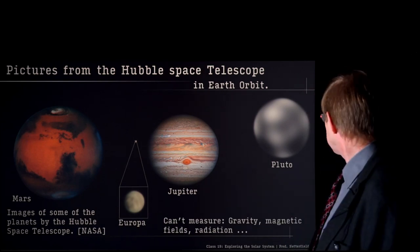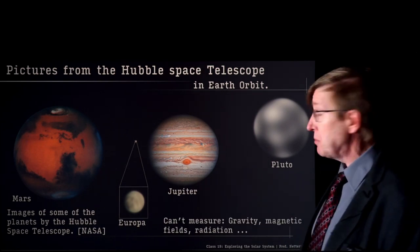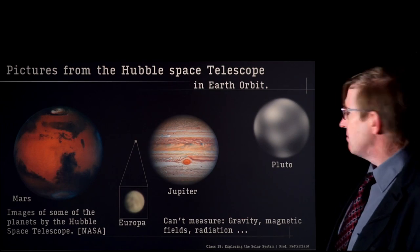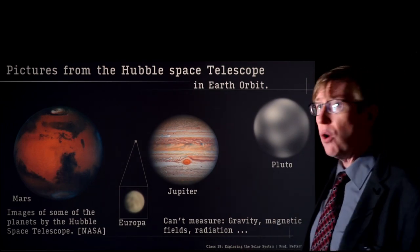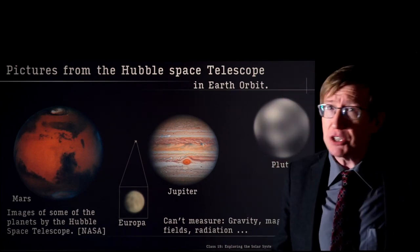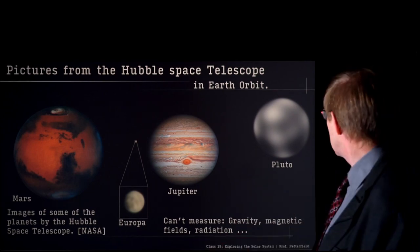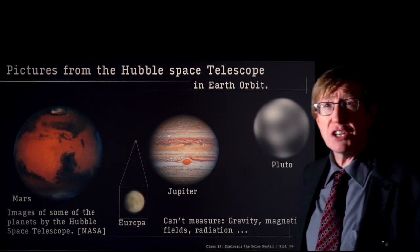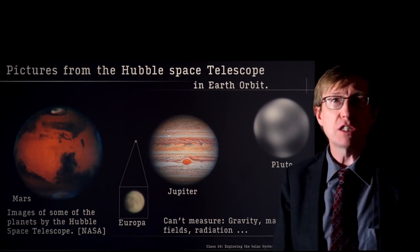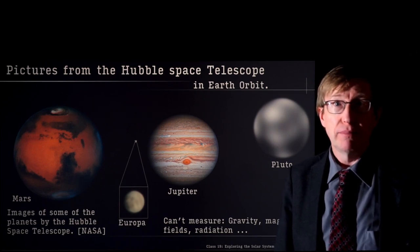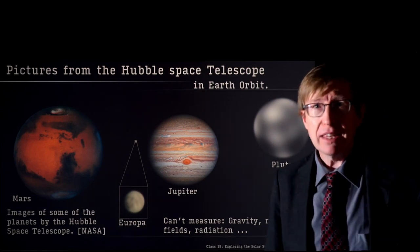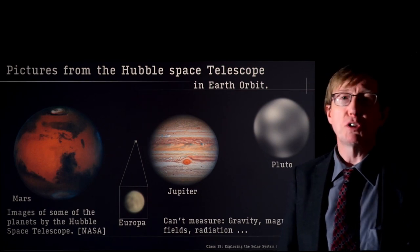The other problem is that with the Hubble Space Telescope you can take pictures, but there are a lot of things you can't measure. You can't measure gravity — remember we talked about learning about Jupiter's core by Juno orbiting and measuring its acceleration very carefully. You can't measure magnetic fields, radiation, go and land on Mars and measure things about the rocks, or measure wind speeds on Venus if you're orbiting the Earth. You really have to go there and send a probe with multiple instruments.